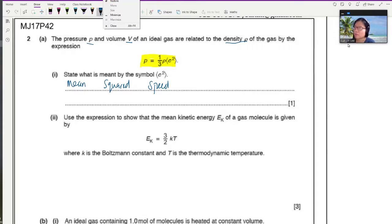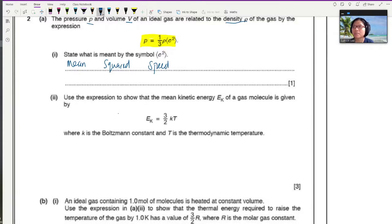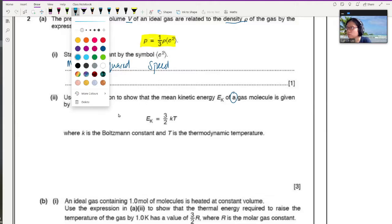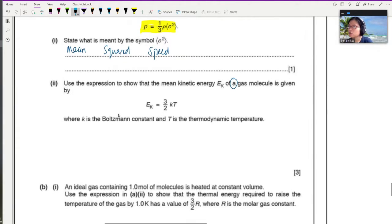Part two: use the expression given to show that the mean kinetic energy of a gas molecule is given by this equation, 3 over 2 kT, where k is the Boltzmann constant and T is the thermodynamic temperature. So this proof is also part of your notes, but I can do it here again with you. This one is 3 marks, so better show everything clearly.